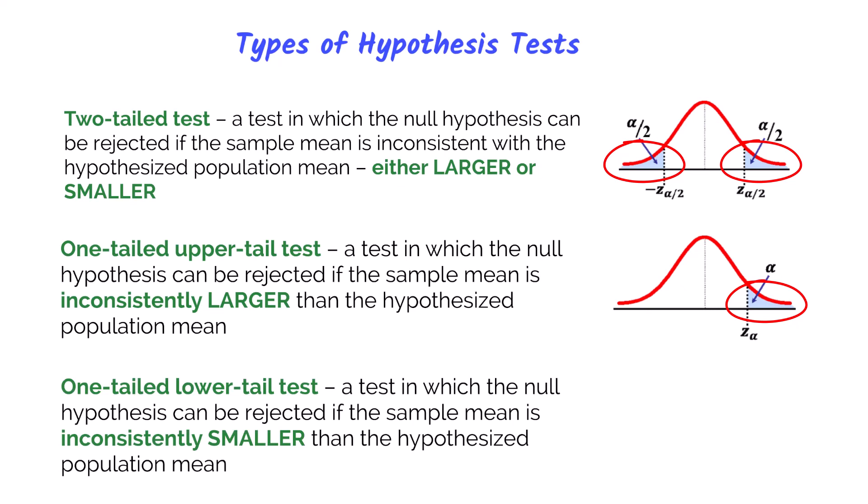You could also be working with a one-tailed lower test, where the null hypothesis will be rejected if the sample mean is much smaller than the hypothesized population mean — falling in the left tail. In other words, if we are somewhere in the white shaded areas of these shapes, we do not reject the null, meaning the null is true. If the sample data gives us enough evidence that we are out in one of the tails — either end in a two-tailed test, the upper right in a greater-than test, or the lower left in a less-than test — then the null is not true and the alternative hypothesis is true.